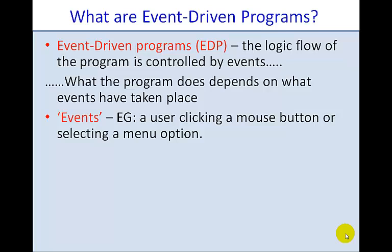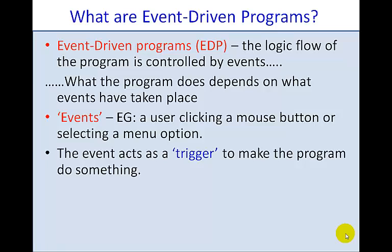When we talk about events in terms of event-driven programs, we're talking about things like a user clicking a mouse button or selecting a menu option off a screen. So an event is something that happens on a form or a user interface. Event-driven programs control these types of interfaces. The event itself acts as a trigger, so clicking on a mouse can make the program do something. It actually triggers some code to run.